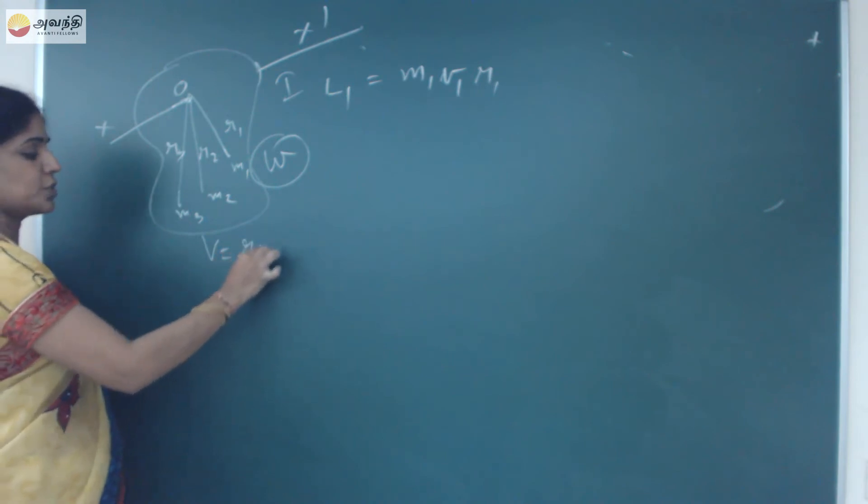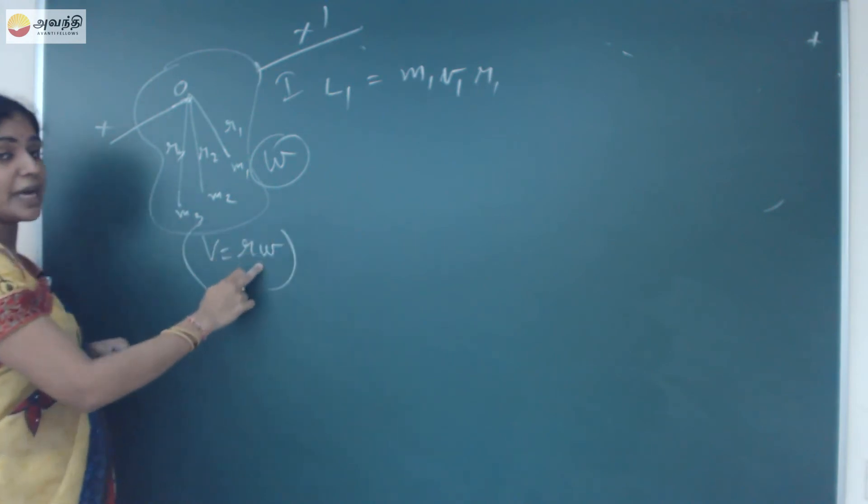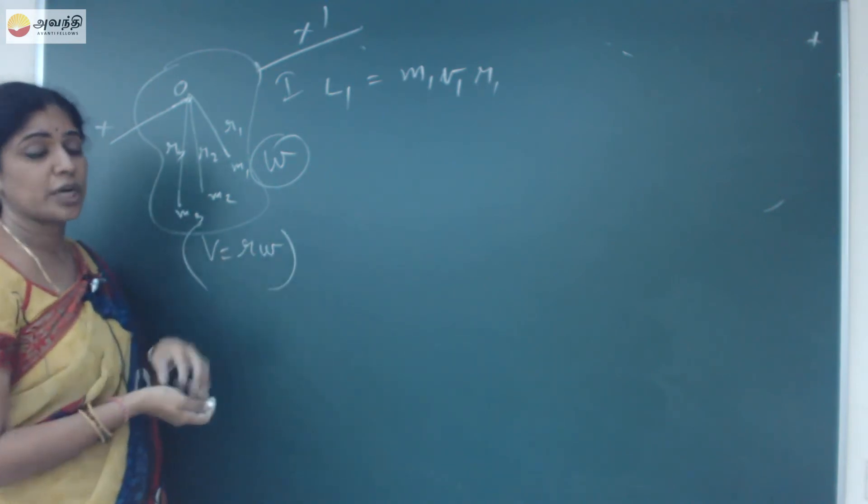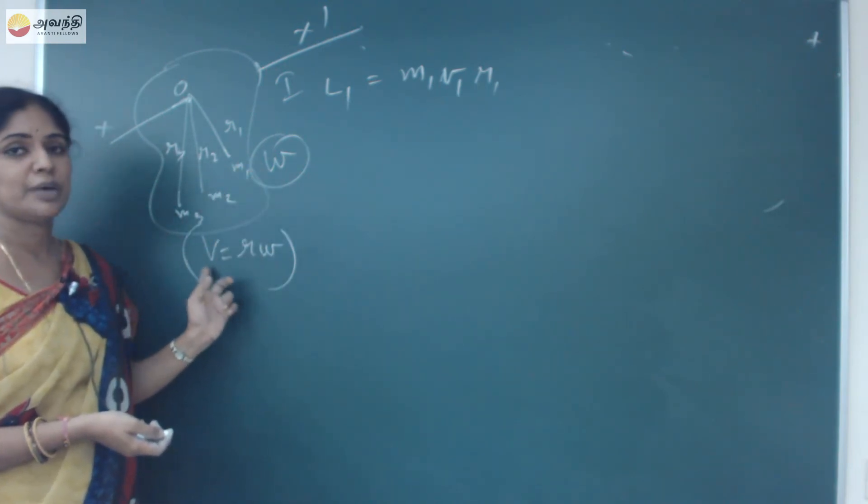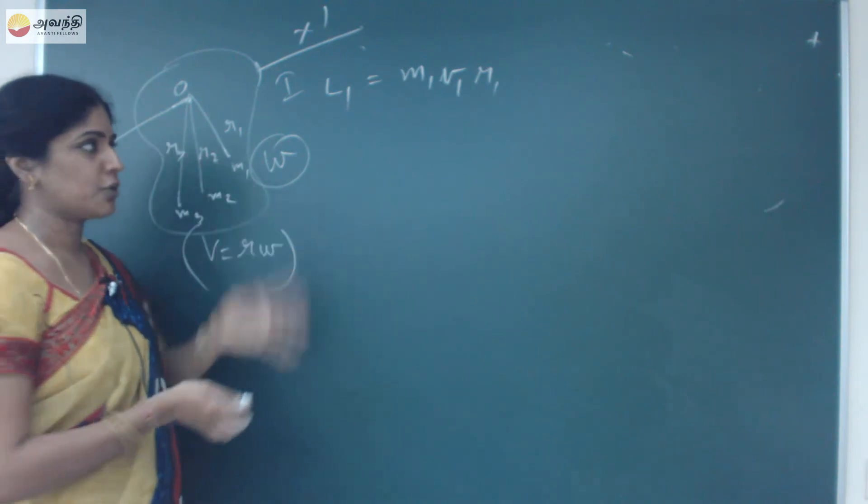We know that by formula V equals R omega. Omega is the angular velocity. We will see that if an object is in rotational motion, the linear velocity will change. Angular velocity is constant.